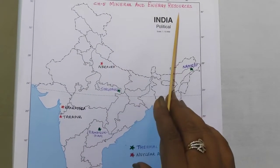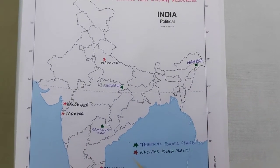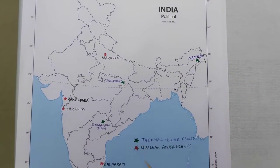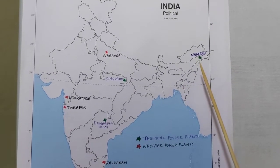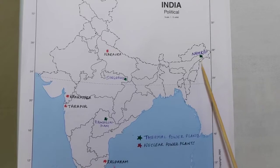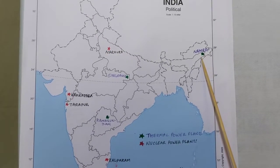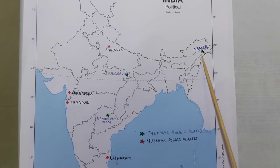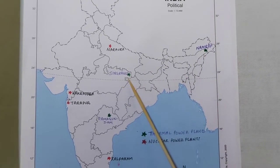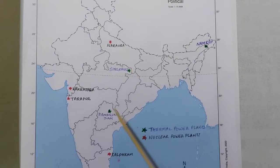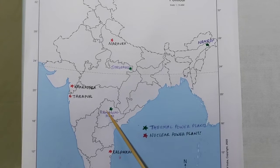Chapter number 5, Mineral and Energy Resources. From this chapter only map work is coming, and that too only thermal power stations and nuclear power plants. Thermal power plants — only three of them — are shown in this map with the green star mark. Here it is Namrup in Assam. Another one is Singrauli in Madhya Pradesh. And Ramagundam, which is in Telangana.